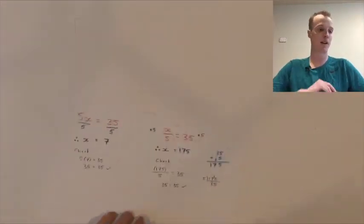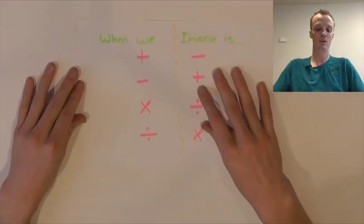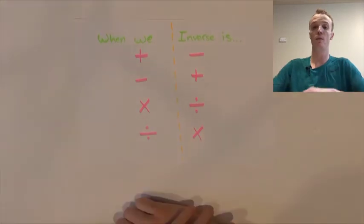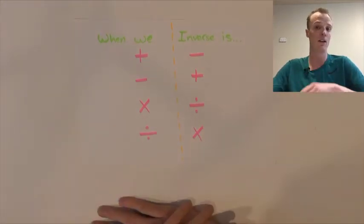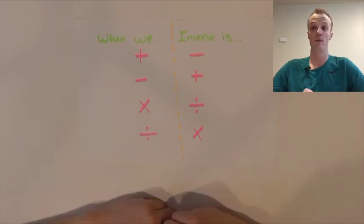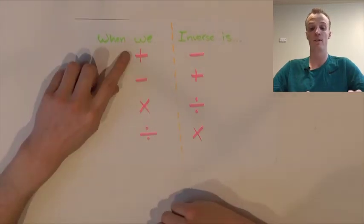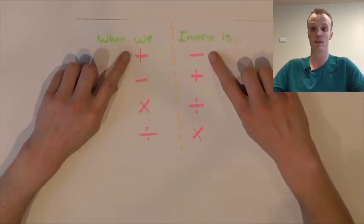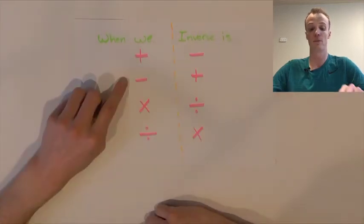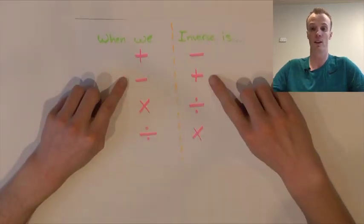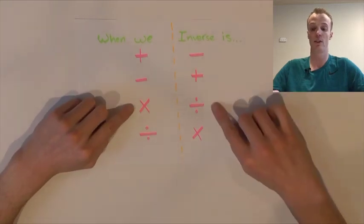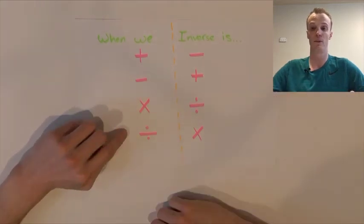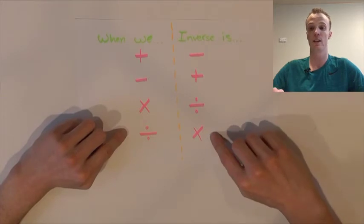So let's have a recap. We've learnt that to solve these equations, we need to perform the inverse operation to get our pronumeral on its own. When we have addition, the inverse is subtraction. When we have subtraction, the inverse is addition. When we have multiplication, the inverse is division. When we have division, the inverse is multiplication.